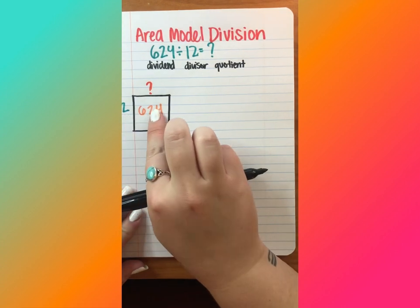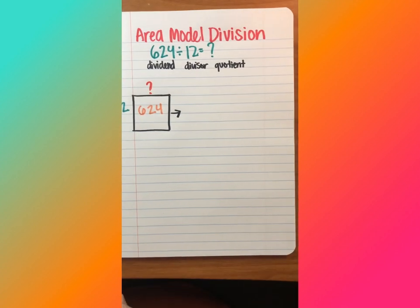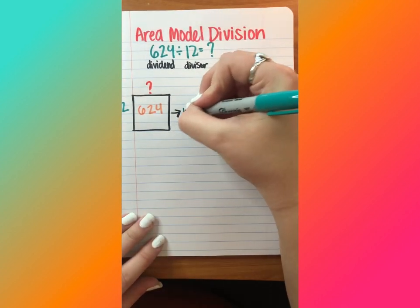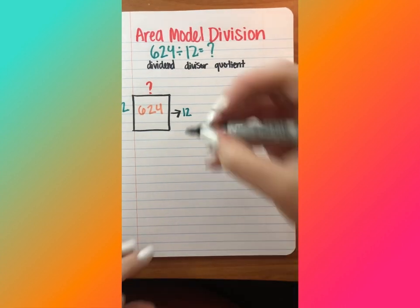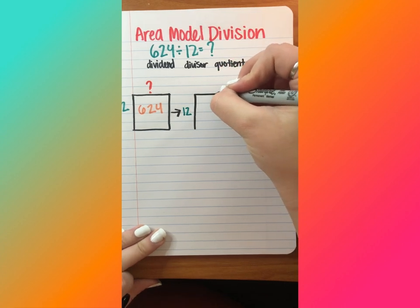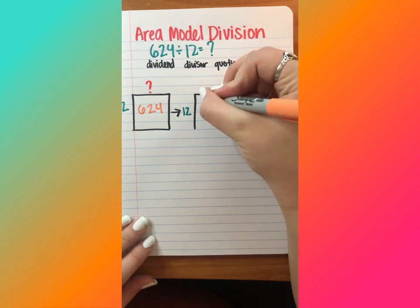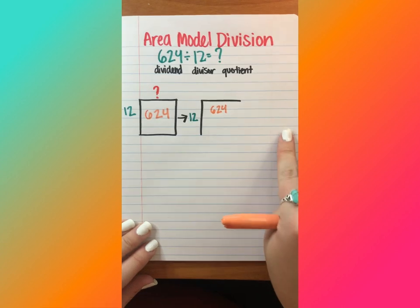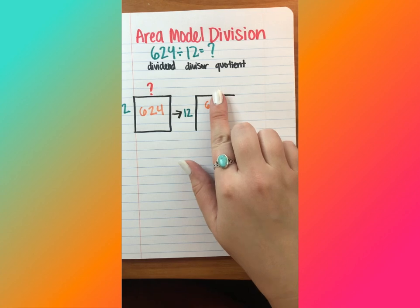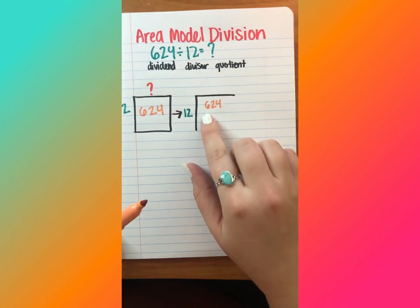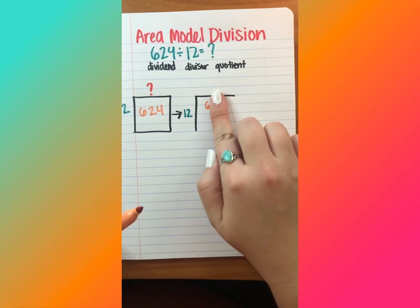So we're thinking of it 12 goes into 624 how many times? So rewriting it would look like this: 12 goes into 624 and I could go to the side and hash out my scratch work, but it's similar to our partial quotient strategy. We're going to break apart the place value. So before I get ahead of myself and try to figure out how many times 12 goes into 624, I'm going to figure out maybe how many times it can go into 600.